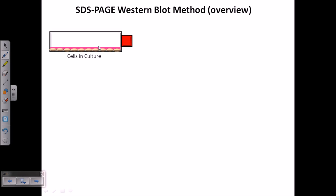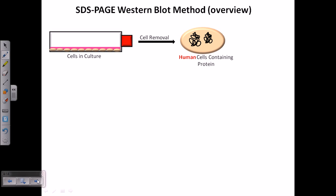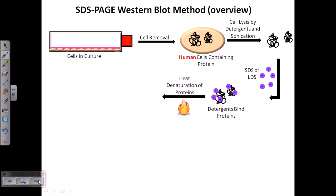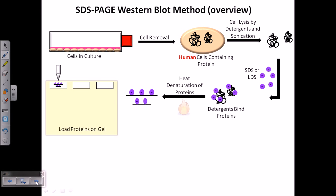In the overview: we take cells from cell culture and lyse them using detergents and sonication to get our desired proteins. These native proteins are folded, so we provide SDS (or LDS), a detergent with many negatively charged residues, to unfold them. Heat denaturation is also performed to open up the folded proteins, giving us linearized, denatured proteins.